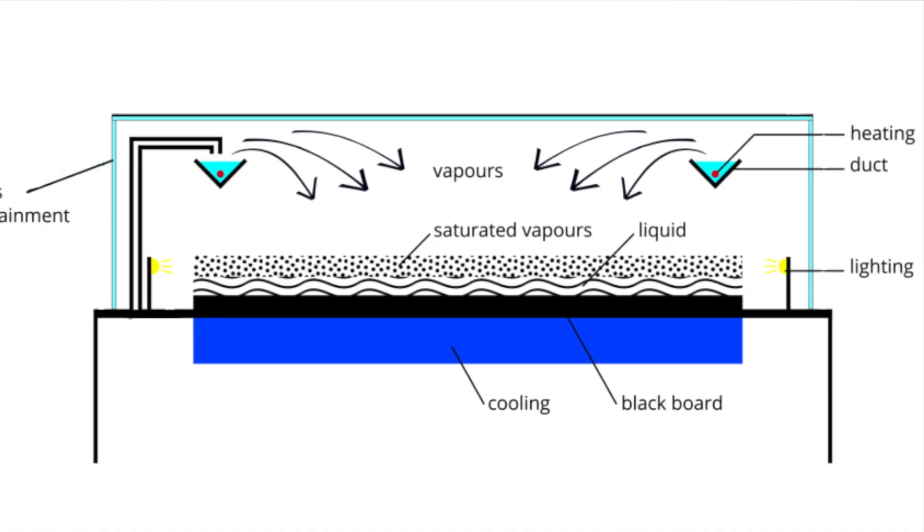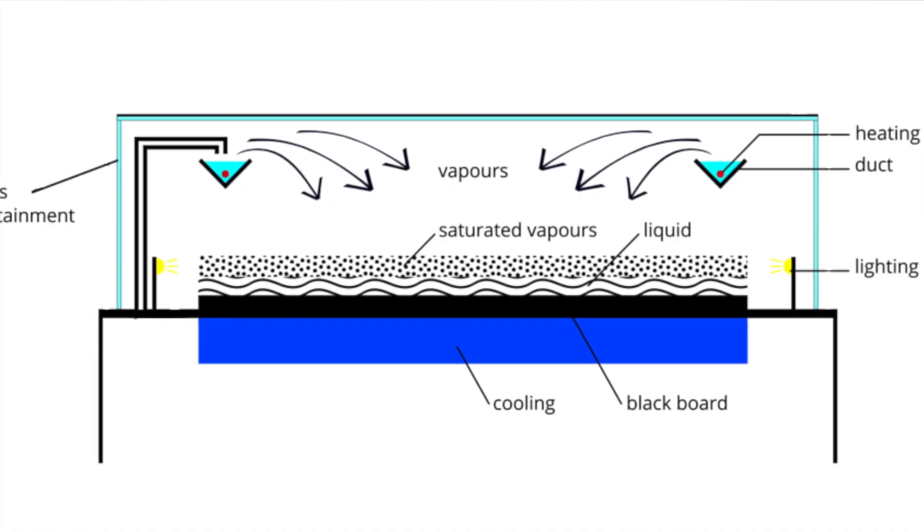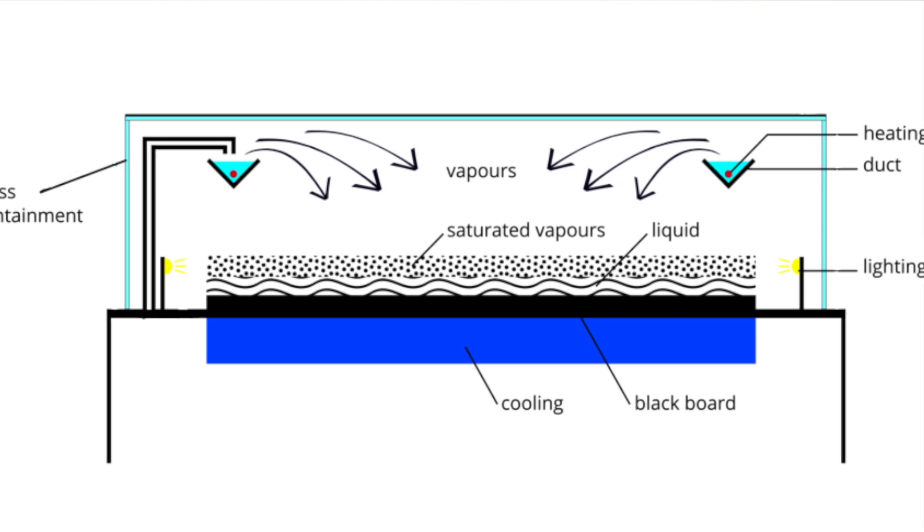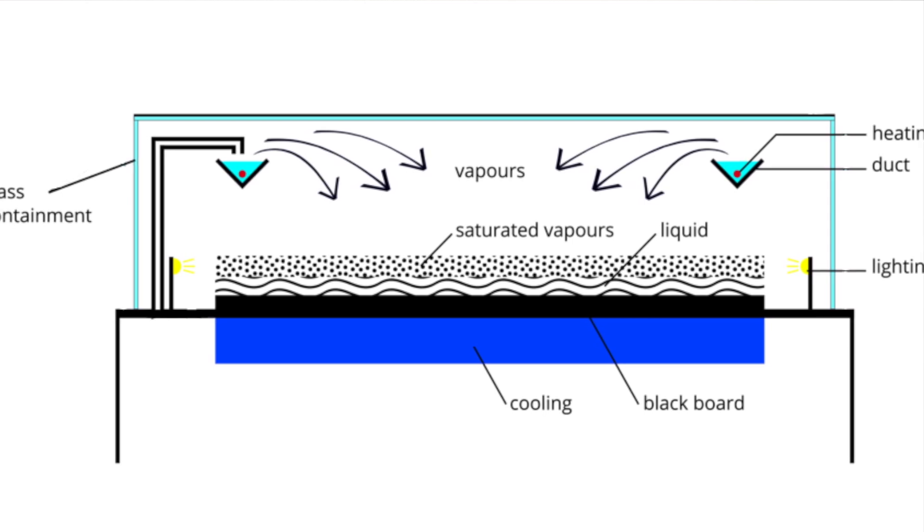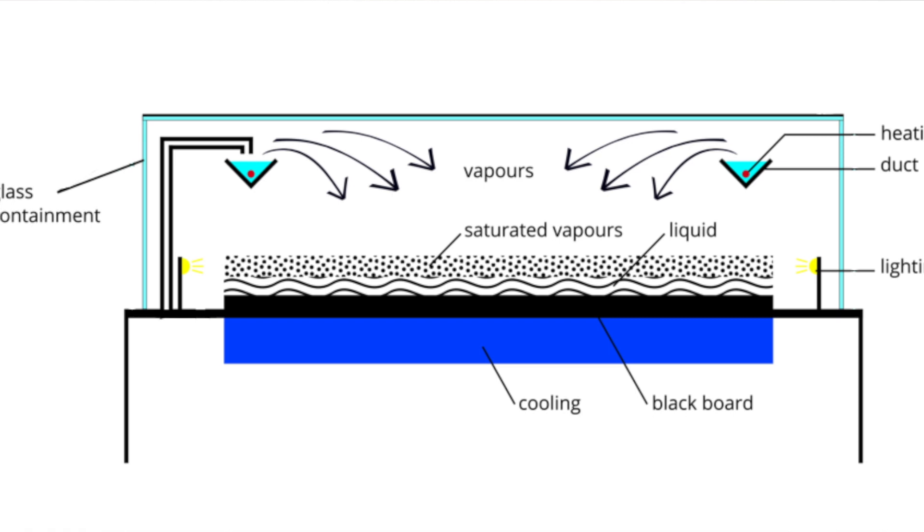It is composed of a sealed environment with a warm top plate and a cold bottom plate, as well as a source of liquid alcohol in a heated reservoir. As the alcohol vaporizes and cools, it falls through the gas and condenses on the cold bottom plate.